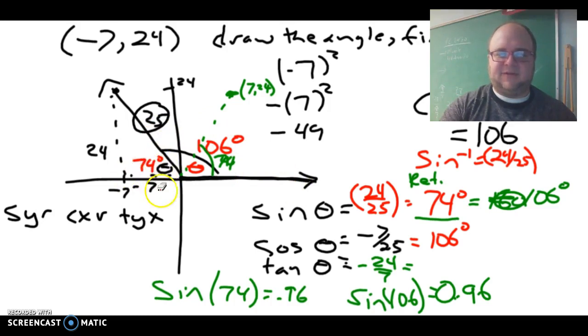Both of those angles - sine of 74 and sine of 106 - gave us a decimal of 0.96 as our ratio. So we knew that that's kind of why that problem occurs.